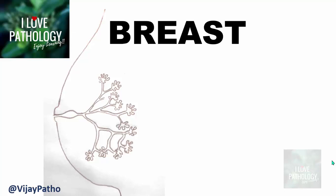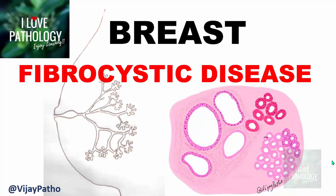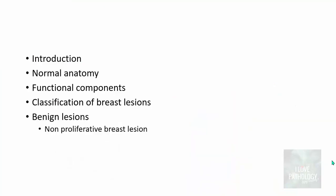Hello everyone. Welcome to this short tutorial from Pathology Made Simple at iloepathology.com. This is a multiple part series discussing the various pathological aspects of breast. The topic I am discussing today is fibrocystic disease. Before that, we will see what is the normal anatomy of breast, what are the functional components, and how we classify the various breast lesions. I am concentrating more on undergraduate student pathology. Today's main topic is one of the important lesions — the non-proliferative breast lesion — and we will be discussing fibrocystic disease in detail.